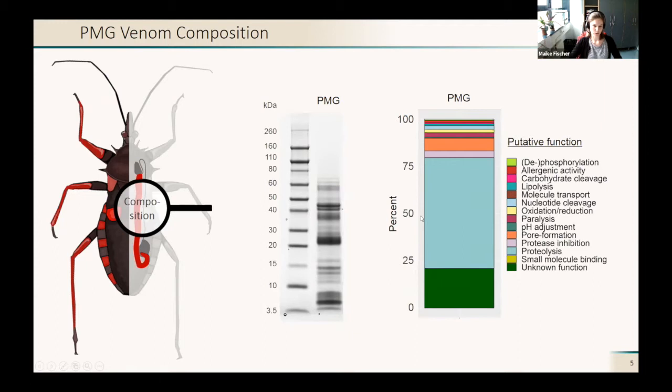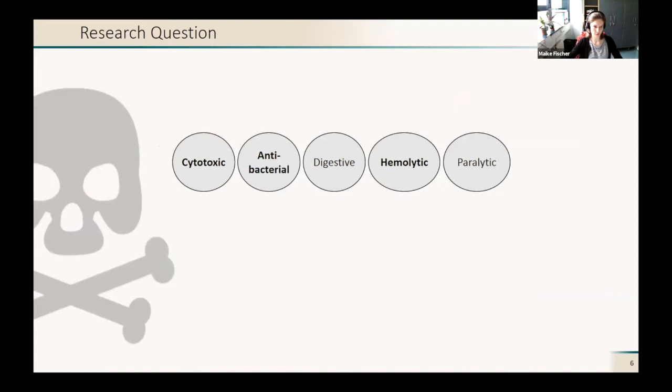We also have other digestive enzymes, we have paralytic peptides, and also what is important is that green part here on the bottom. We have a lot of proteins with unknown function, and we don't know what they do or what they're there for, and this is really interesting for us.